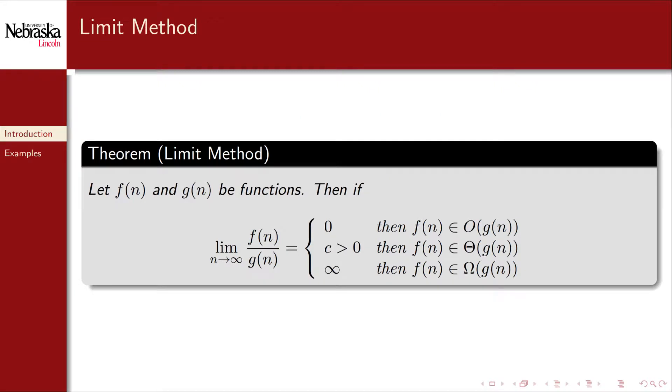These three cases give us the following results. If the limit converges to zero that means that g is growing faster and thus f is Big O of g. If the limit converges to a non-zero constant that means that they have the same rate of growth and so f is Big Theta of g. Finally if it diverges it means that f is growing at a faster rate and so f is Big Omega of g.